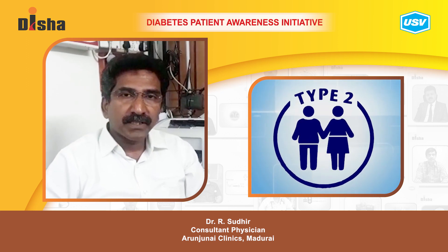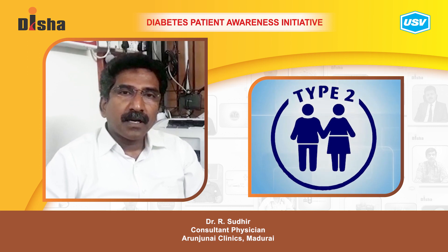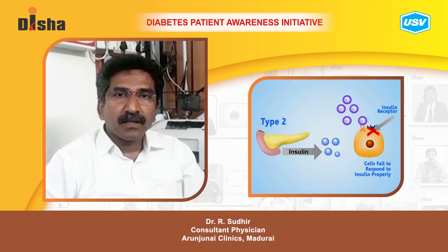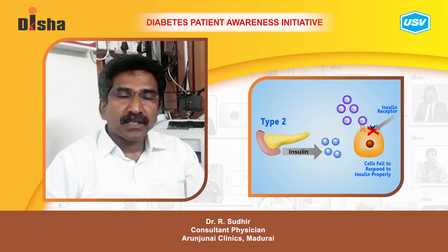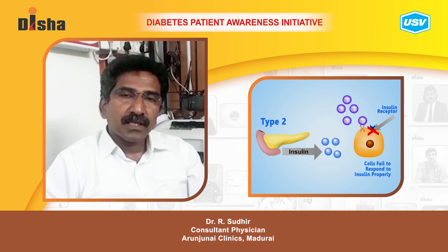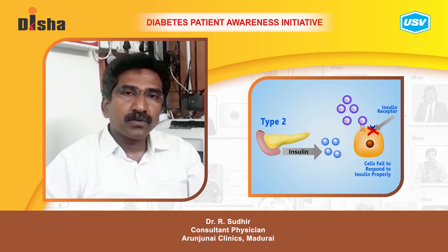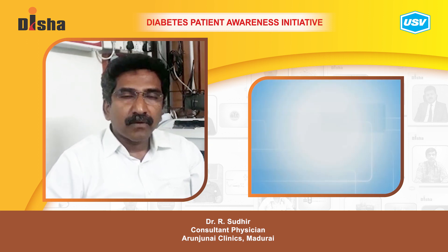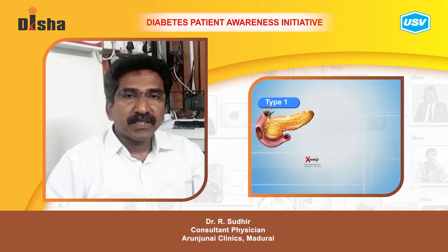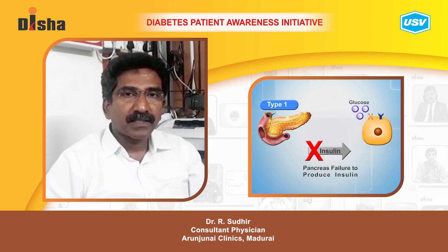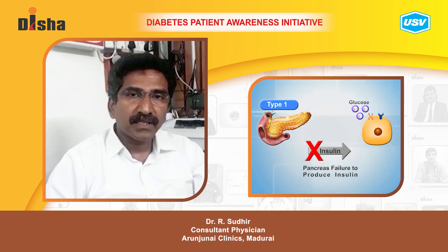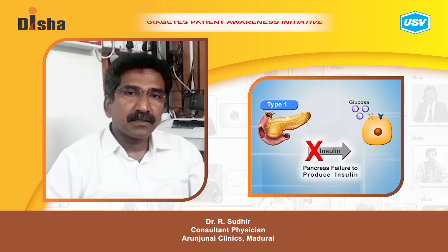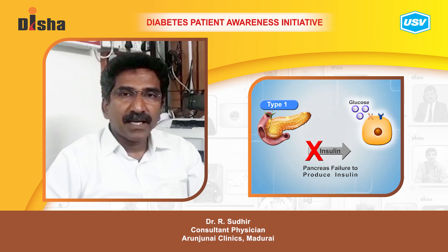Type 2 diabetes is a combination of insulin resistance and insulin deficiency, which is progressive and leads to insulin therapy in the later stages. Whereas type 1 diabetes, previously called insulin-dependent diabetes mellitus, is one where insulin is essential for life.